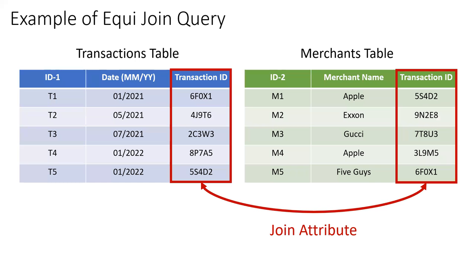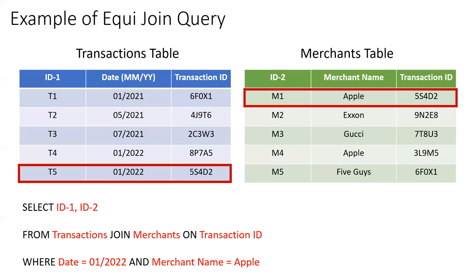Here is a one-slide example of an equi-join query. We have two tables — one for transactions and one for merchants — with transaction ID serving as the join attribute. We wish to find all records in the join of these two tables, with date being January 2022 and merchant name being Apple.